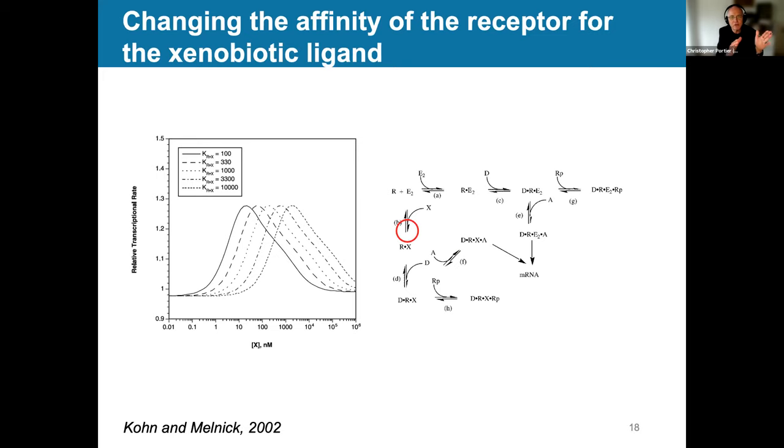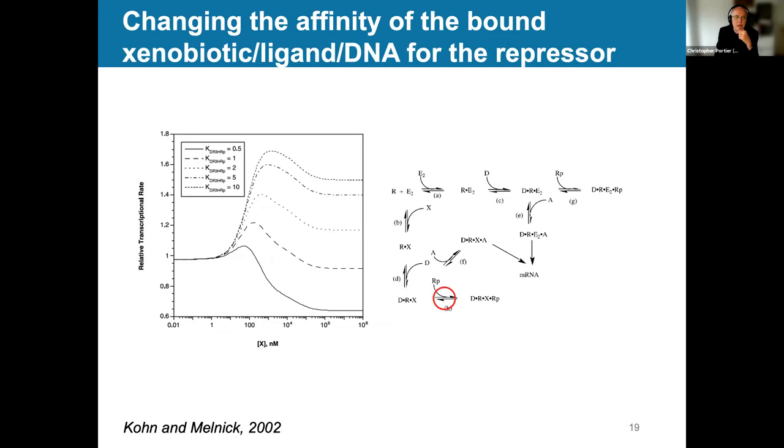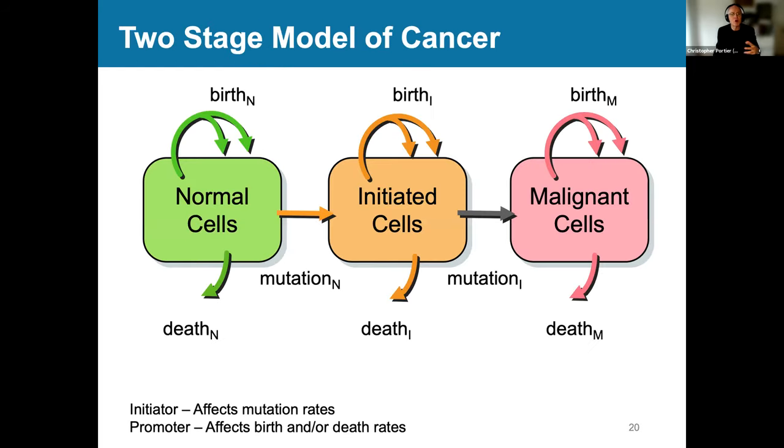You can see shifts in the distribution, so that what normally would happen in a low range for the environmental, for the process, happens at a higher range. Again, you can see things that go up and down. So there's all types of possibilities of dose response curves, theoretically, based upon what's actually happening in these systems.